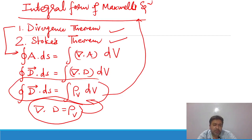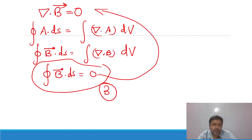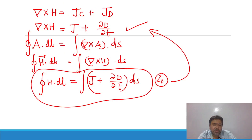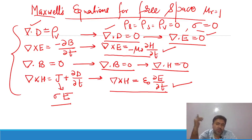Integral forms: ∮D·dS = ∫ρv dV; ∮E·dL = ∫(−∂B/∂t)·dS; ∮B·dS = 0 (divergence of magnetic flux density is zero); ∮H·dL = ∫(J + ∂D/∂t)·dS. For free space: no line, surface, or volume charge density exists; conductivity is zero; μr = 1 and εr = 1. So only μ₀ and ε₀ exist. The equations become ∇·D = 0 or ∇·E = 0, ∇×E = −μ₀ ∂H/∂t, ∇·B = 0 so ∇·H = 0, and ∇×H = ε₀ ∂E/∂t.